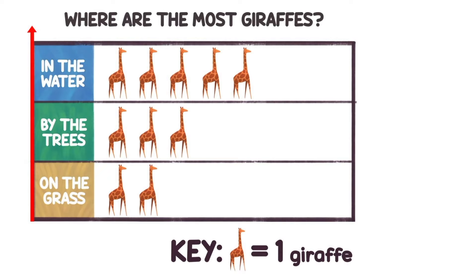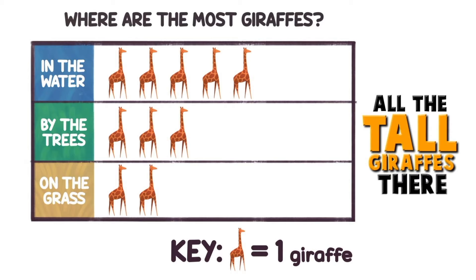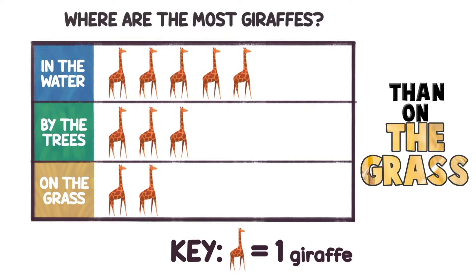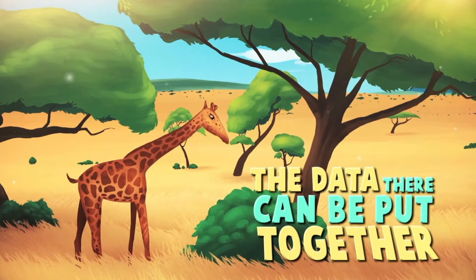Now we can compare all the tall giraffes and see there's one more giraffe by the trees than on the grass. On a bar graph, the data there can be put together, taken apart, or compared.